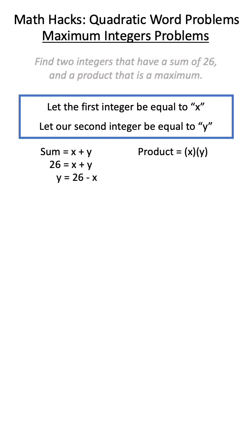If we rearrange our sum equation and substitute this into our product equation, we can now create a quadratic relationship between product and the x-term. Next, we just need to solve for the x-term of the vertex.